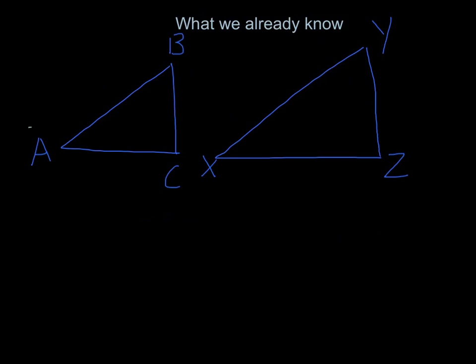So what do we already know about similar triangles? We learned in our transformation lesson that similar triangles have the same shape but an overall different scale. So this means that all the angles of similar triangles are always going to be congruent.